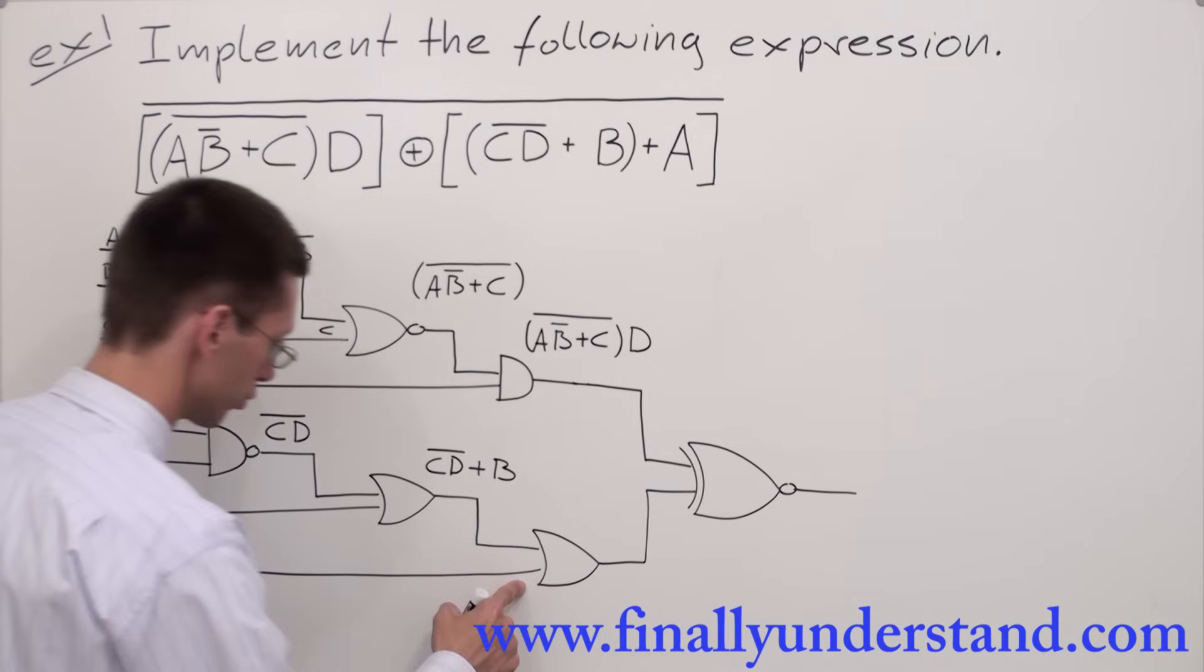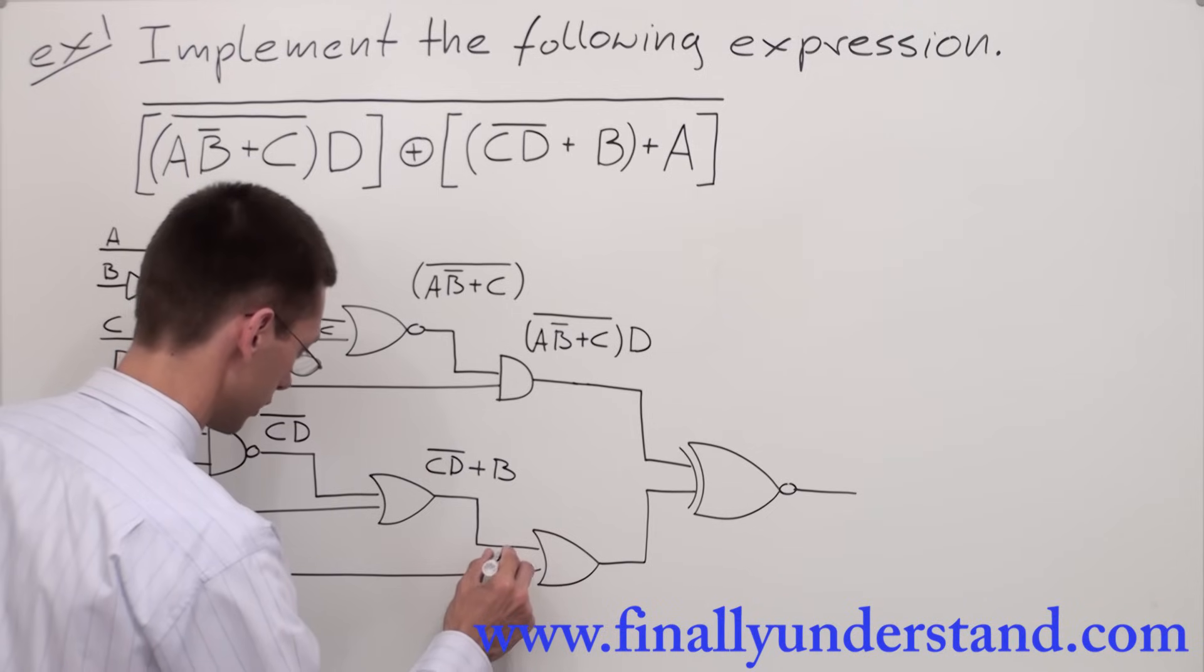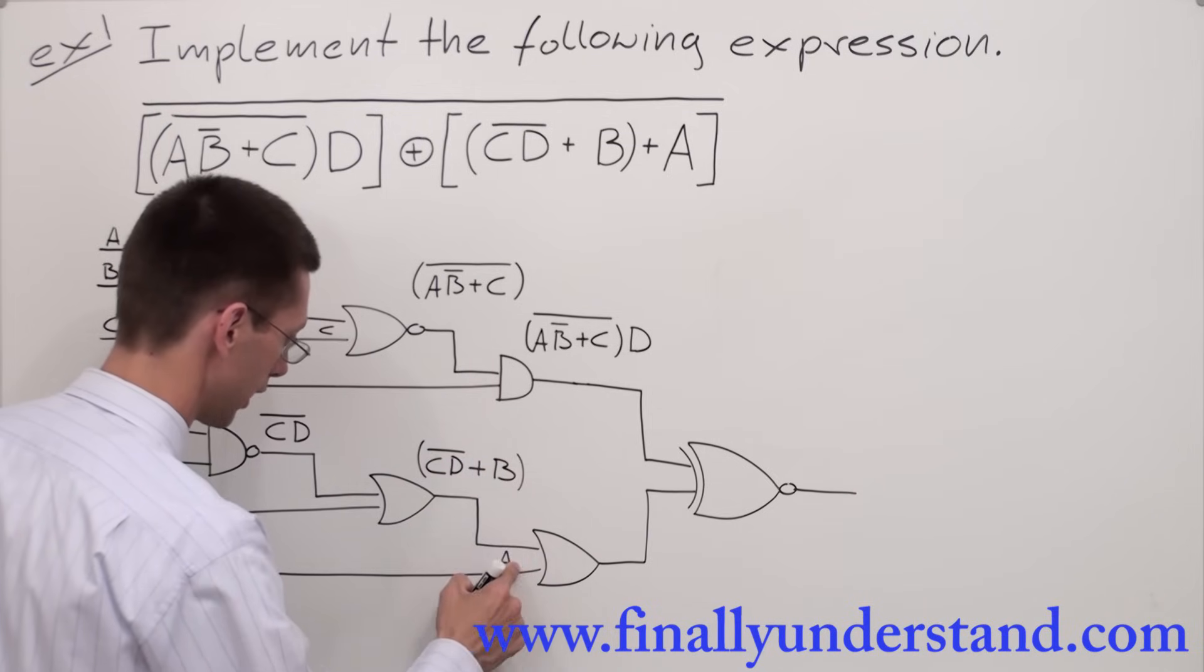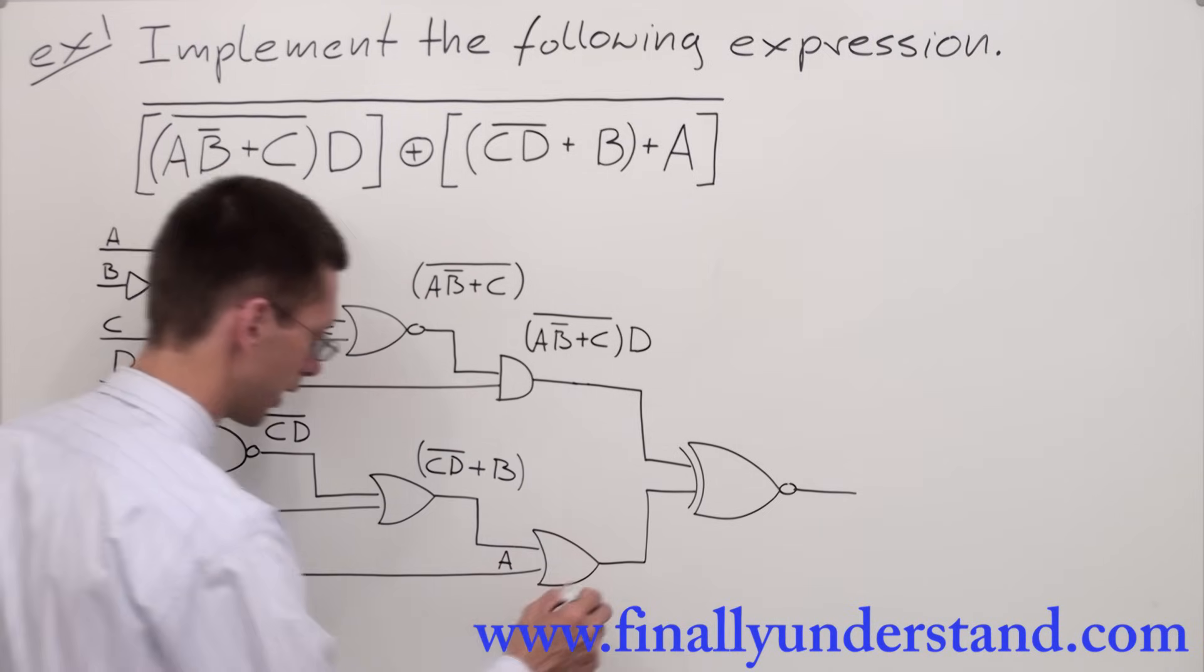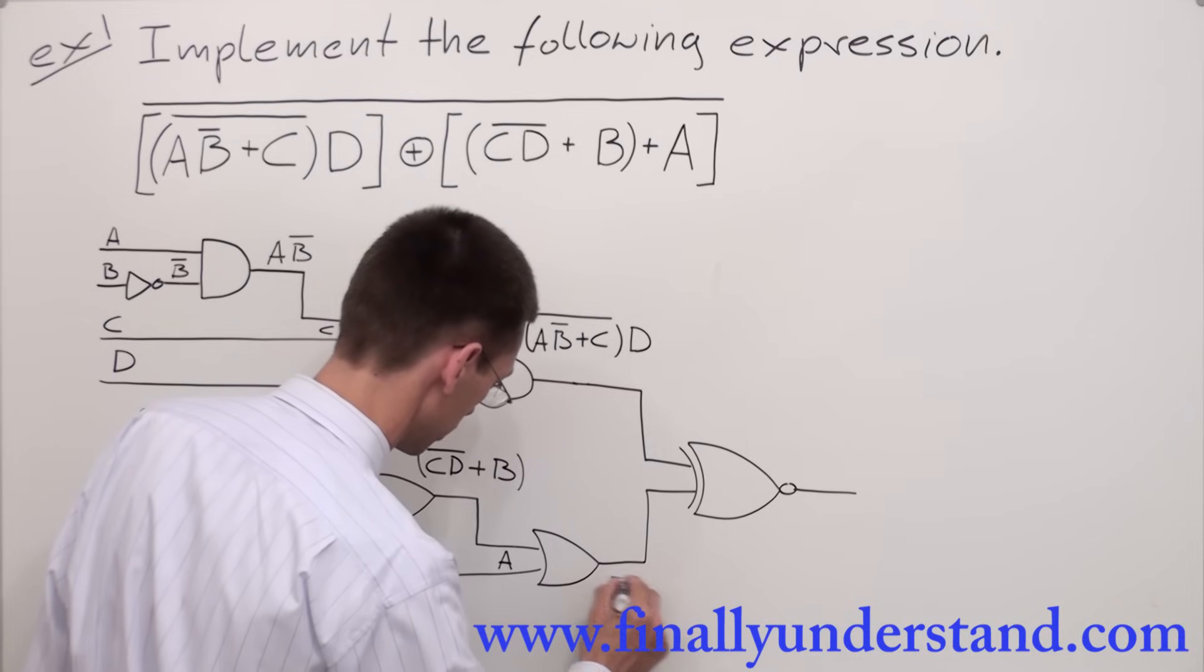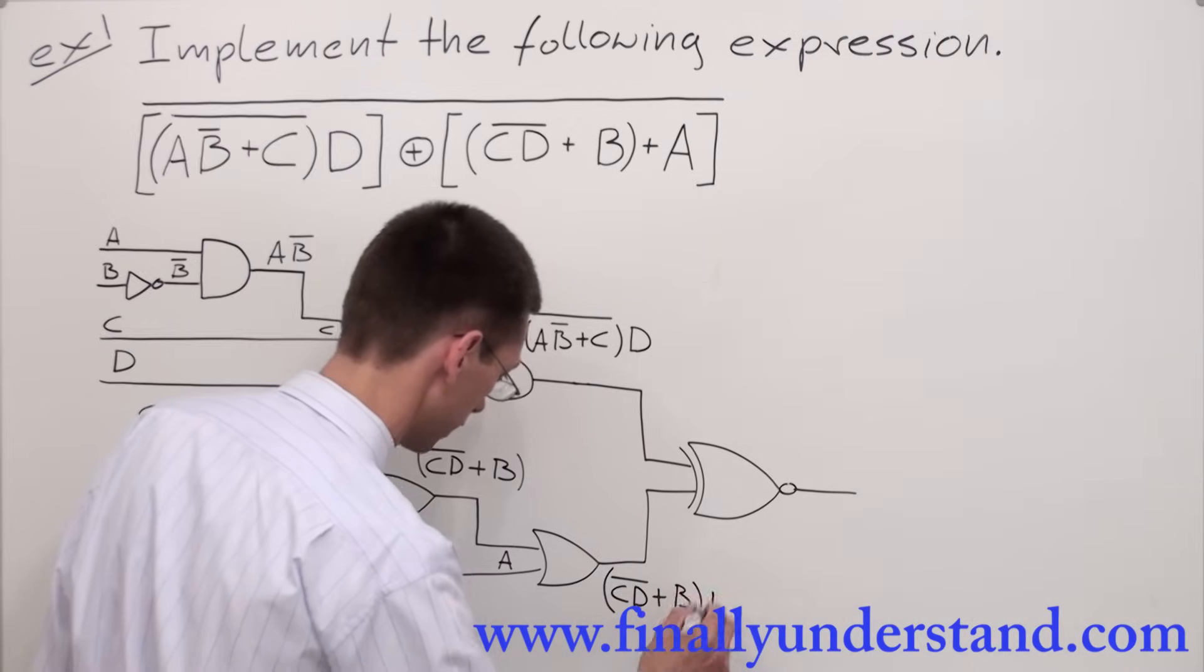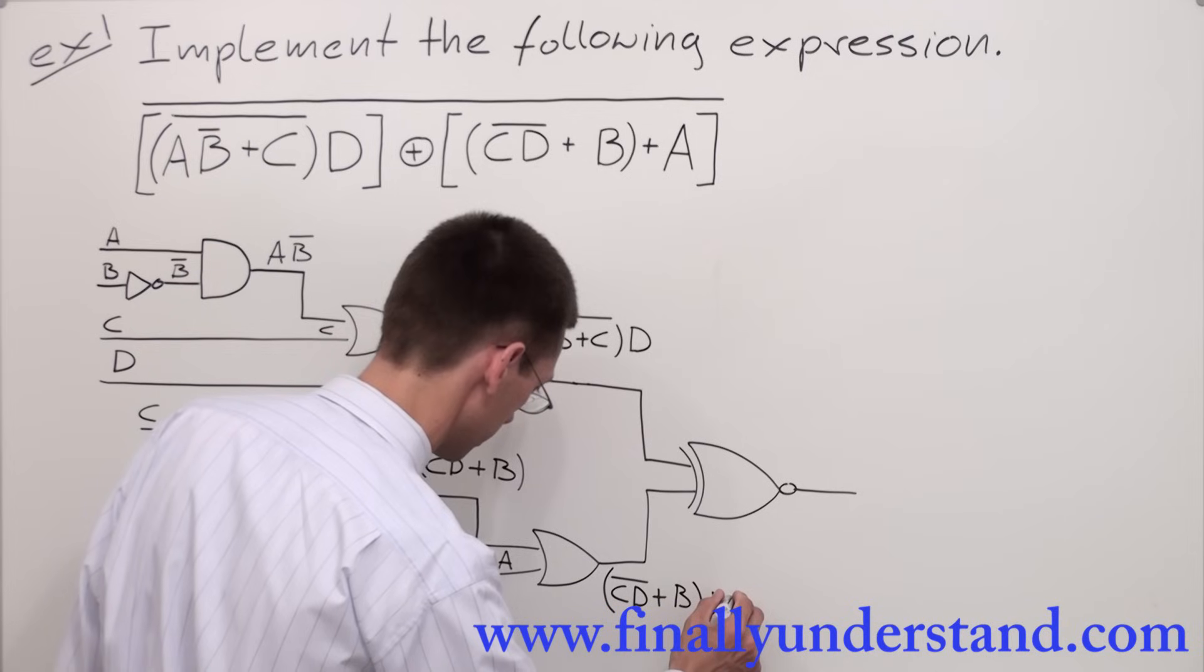A input goes to my other OR gate, and this is going to be my A. And this expression will go to the first input and A will go to the second. Remember, this is my addition. So I have (C̄D̄ OR B). We have to OR this with A.